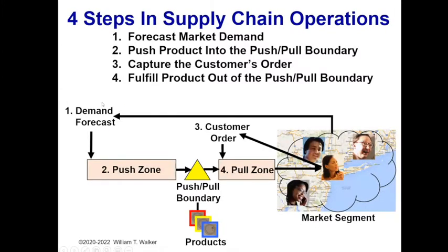If you look at any supply chain, in my opinion, there are four actions that have to happen. The whole business of supply chain is we're trying to match a market segment — it might be New Jersey, New York, Connecticut, for example — with some value in the products that we have to offer. In order to do that, four things have to happen. First and foremost, somebody, somehow, someway, has to forecast the demand of the marketplace.